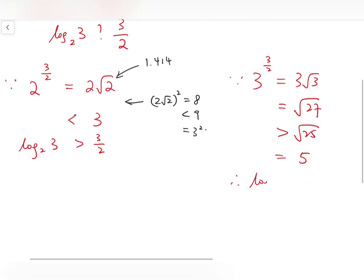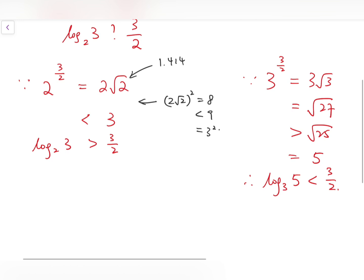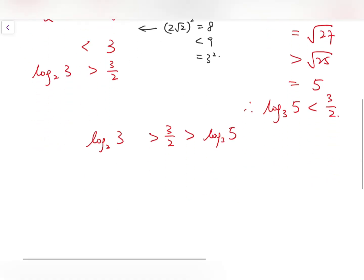And so therefore, log base 3 of 5 should be less than 3 over 2. And so if you put those inequalities together, you can say that log base 2 of 3 is larger than 3 over 2 and larger than log base 3 of 5. So you have the final conclusion as desired.